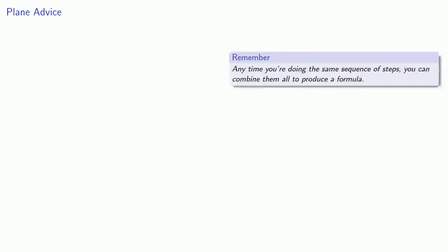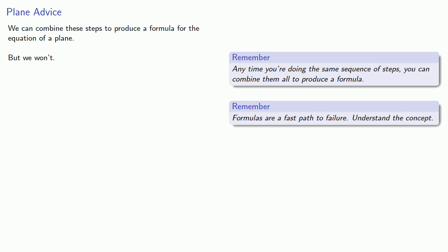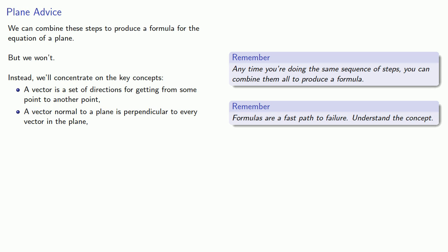So remember that any time we're doing the same sequence of steps, we can combine them all to produce a formula. And so we can combine all these steps to produce a formula for the equation of a plane. But we won't. The thing to remember is that formulas are a fast path to failure. Understand the concept. If you understand the underlying concept, then the formula is irrelevant and often more trouble than it's worth. In this case, finding the equation for a plane relied on a couple of important concepts. First, a vector is a set of directions for getting from some point to another point. And in this problem, that meant that given the point in the plane, we could also find vectors that were in the plane. The second was this geometric concept that a vector normal to a plane is perpendicular to every vector in the plane. The third concept here is really a matter of convenience, which is to remind us that the cross product does give us an orthogonal vector. And lastly, the dot product gives us the angle between vectors.